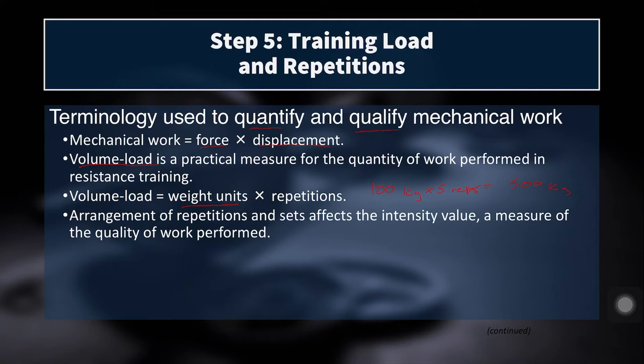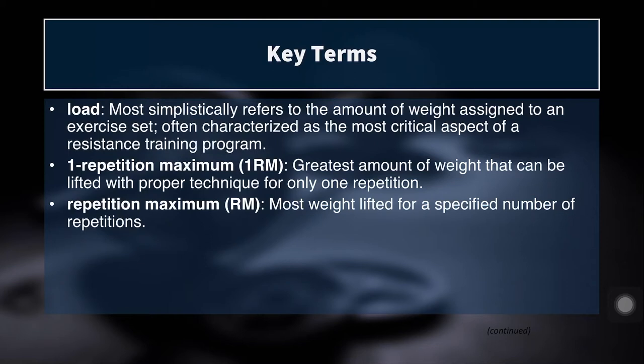The way that we arrange repetitions and sets affects the intensity value of an exercise, and intensity is a measure of the quality of work performed. Load most simplistically refers to the amount of weight assigned to an exercise, and it's often characterized as the most critical aspect of a resistance training program. There are other critical factors as well, especially when we're talking about athletic performance — namely the velocity at which you can move specific loads.